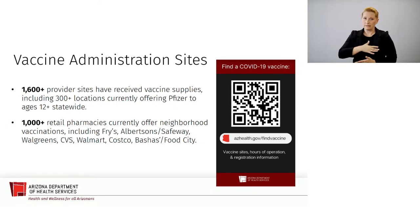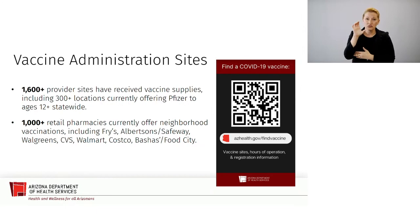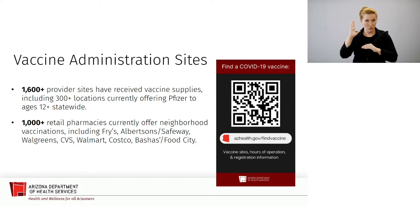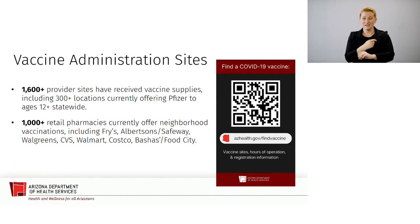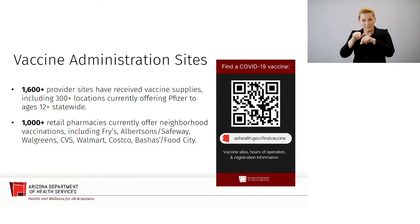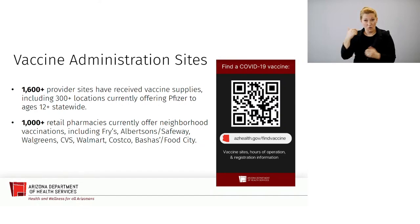If you are still looking to find a vaccine site, we have over 1,600 provider sites that have received vaccine supplies, including 300 locations currently offering Pfizer — which is the vaccine available for those 12 and older. We also currently have over a thousand retail pharmacies offering neighborhood vaccinations at almost all pharmacies statewide. Our ADHS find vaccine app has been updated with a feature to search by vaccine type, so that families interested in finding Pfizer for those between 12 and 17 years old can easily do that.